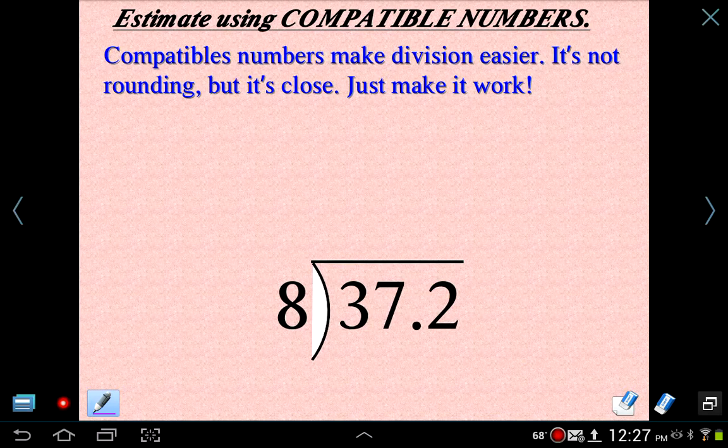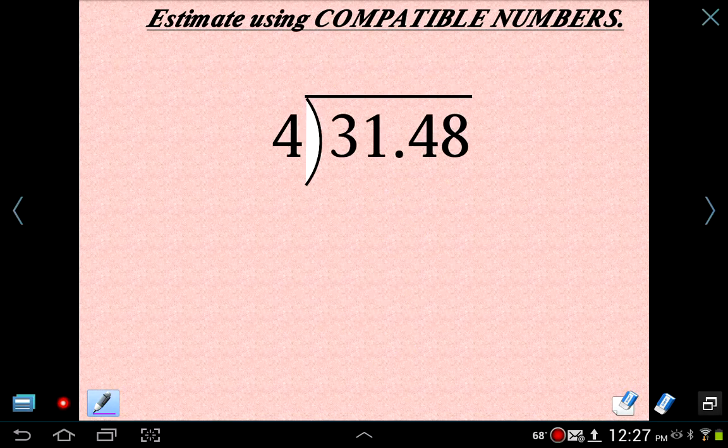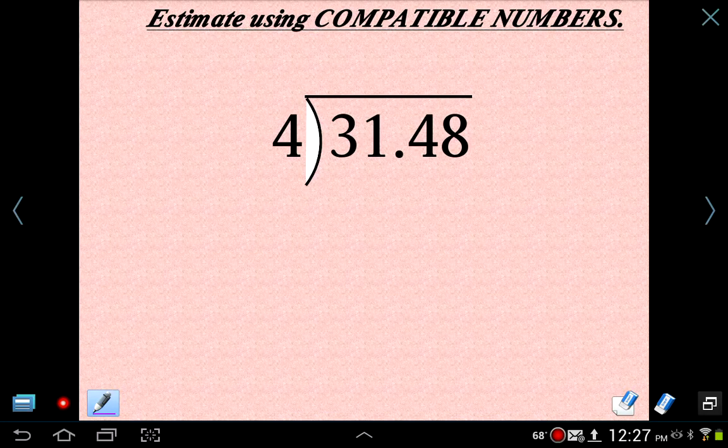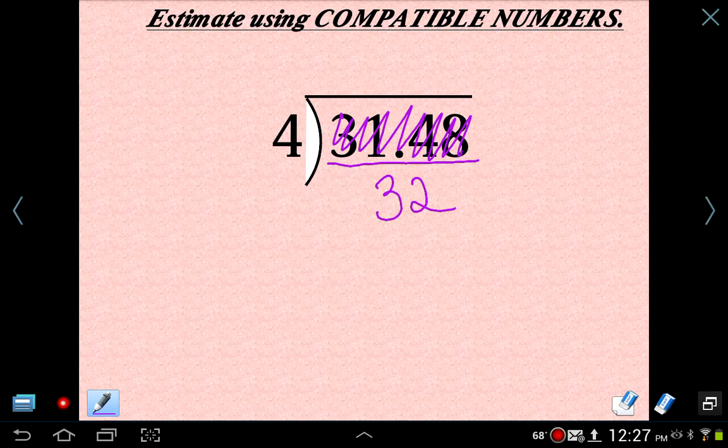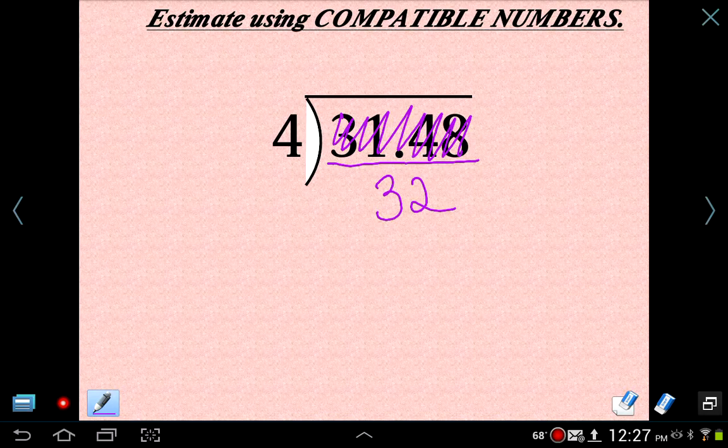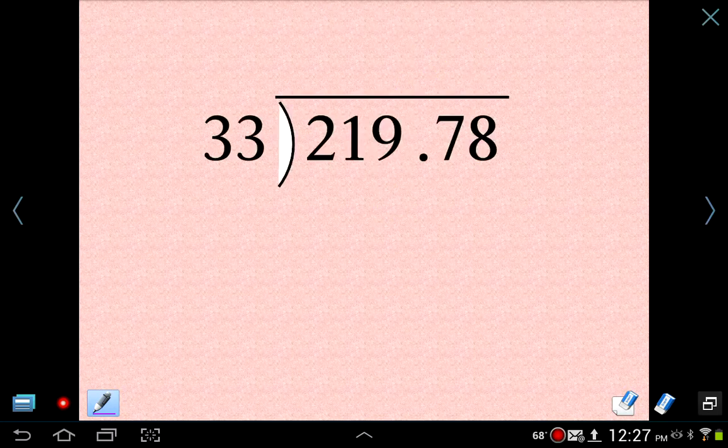Here. Again, let's do some compatible numbers stuff. So 37.2 divided by 8. I would think of this as 40. 40 is compatible with 8. And that's 5. That's compatible numbers right here. 31.48 divided by 4. I am thinking of changing 31.48 to 32. Now, even though if I were to round this, if I were to round 31.48 to the nearest 1, I would get 31. But 31 isn't compatible with 4. 32 is. So I moved it up to the next best thing, which was 32. So 32 divided by 4 is 8. That would be a reasonable estimate for that problem.